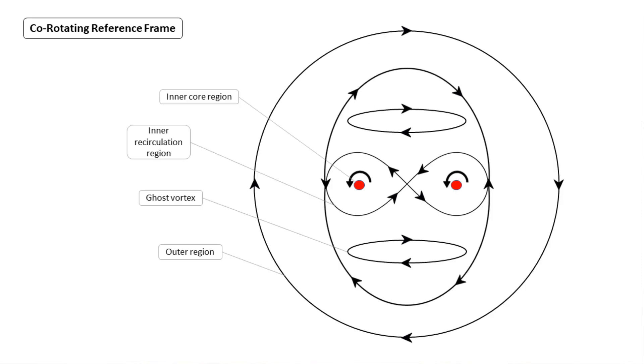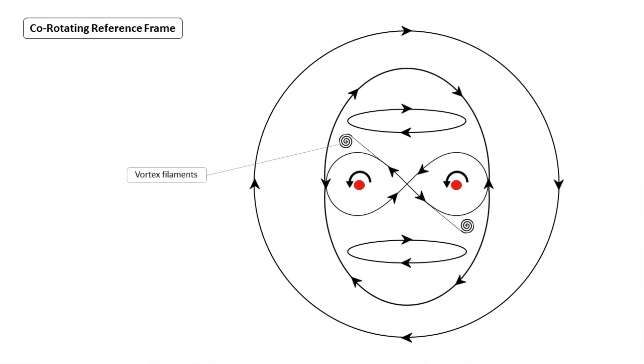In the co-rotating frame, there are many more regions of interest: the inner core region, the inner recirculation region, the ghost vortex, and the outer region. Note that the outer region appears to rotate in a different direction, but this is due to the co-rotating reference frame. During the merge, the saddle region diminishes, and the ghost vortex begins adding asymmetry through filaments on the upper left and lower right.